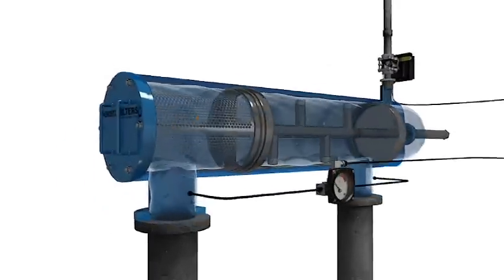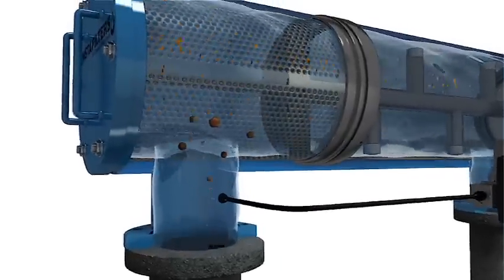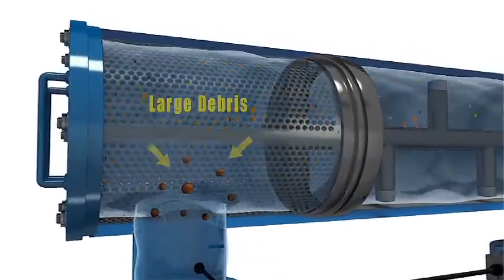During normal operation, water enters the filter through the inlet flange and passes through the coarse screen. The coarse screen catches large debris and protects the fine screen.